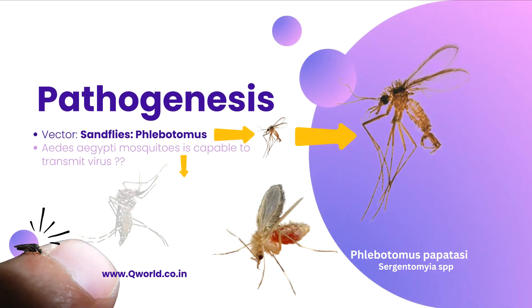Regarding pathogenesis, the vector that transmits this virus is basically a sandfly belonging to the Phlebotomus species. It is not Phlebotomus argentipes — that species commonly transmits Leishmania donovani, which causes Kala-azar in India. Here, Phlebotomus papatasi is the species mainly involved. In some cases, Sergentomyia species of sandfly are also involved, but because humans do not come into contact with them frequently, Phlebotomus papatasi is the main vector. We have also seen that this virus is capable of infecting cells of Aedes aegypti mosquito, which has all the qualities required for transmission — but whether Aedes aegypti is actually a vector is yet to be found out.